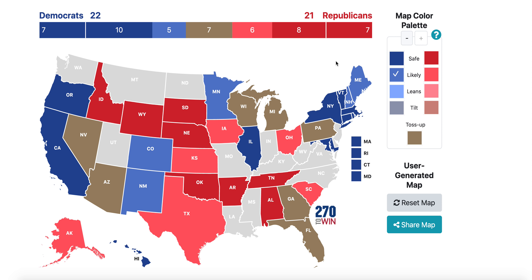The next states are lean states — won by narrow amounts. There's actually only one lean Republican state, and that is Florida, which goes to the GOP by a 3% margin, the same margin Donald Trump won. For the Democratic Party, they have lean states in Michigan, Pennsylvania, and Nevada. This actually puts the Democratic Party at 25, which means in the worst case they would tie with the Republican Party.